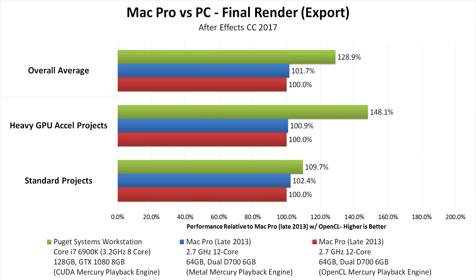Just like with RAM previews, we divided our testing between standard projects and heavy GPU-accelerated projects. With our PC workstation at about 60% the cost of the Mac Pro, we saw about a 10% performance gain with standard projects and about a 50% performance gain with the heavy GPU-accelerated projects. Doing a final render shouldn't be that much different than doing RAM previews at full resolution, so it's interesting that we only saw a 50% gain here where we saw a 3x gain during RAM previews. This suggests there might be a software bug in After Effects when using GPU acceleration on the Mac Pro, but even so, we're still seeing about a 50% performance gain on heavy GPU-accelerated projects by using a PC.